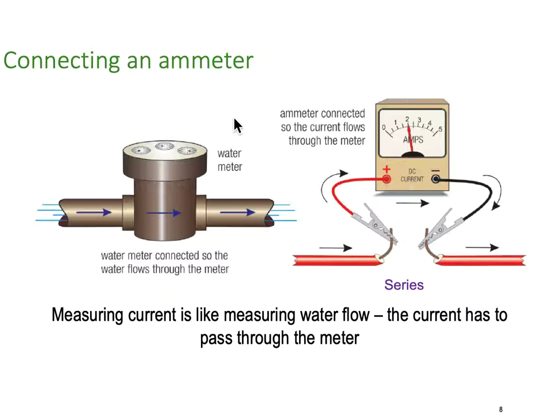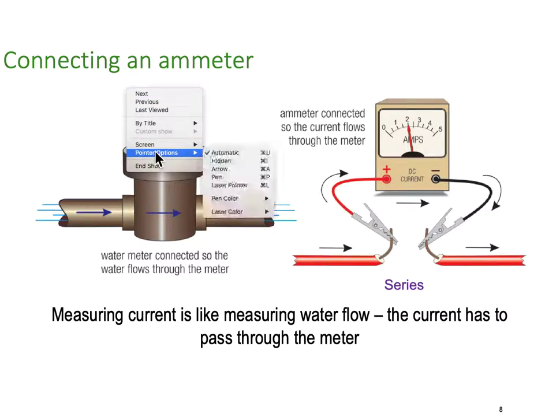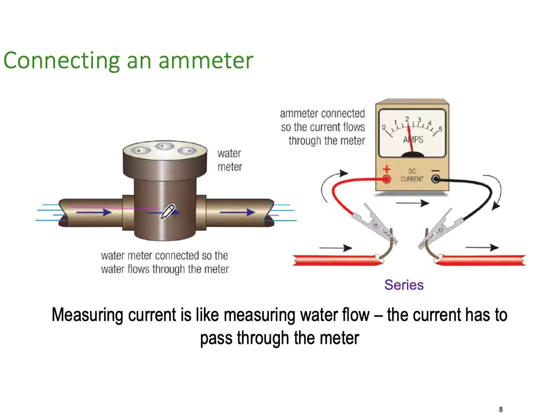Ammeters are connected in series. Coming back to our little water flow analogy, if I want to know how many litres per second are going through here, a water meter measures litres per second. An ammeter measures amps or current. Rather than trying to measure electrons per second, we have a nice, neat unit called amperes. In this particular case, we have to break into the circuit. We have to put our ammeter in series. We go into the meter, the meter carries all the full load of the current, back out of the meter and back to the load. Ammeters are connected in series.